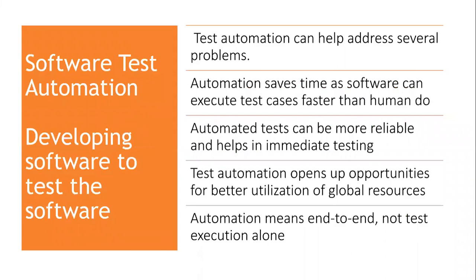What is called software test automation? It is used to develop software to test software — that is, we develop a software test tool which helps to test the software. It can help address several problems. The first problem is it can save time, as the software can execute test cases faster than a human being. That is, whenever we need to run test cases overnight, we can make use of this automation test tool and save time. Next, automated tests can be more reliable and can enable immediate testing.